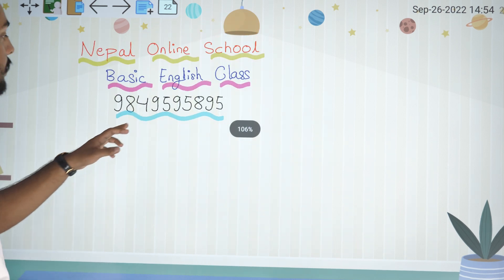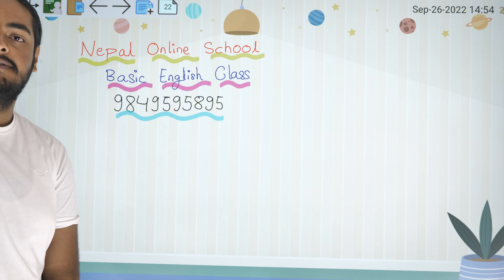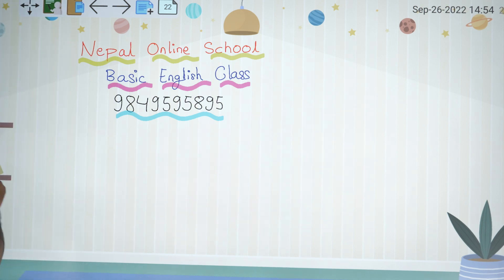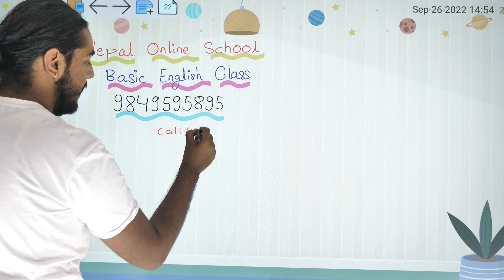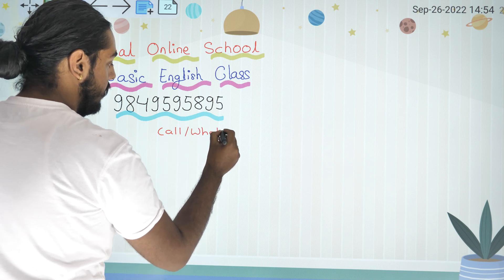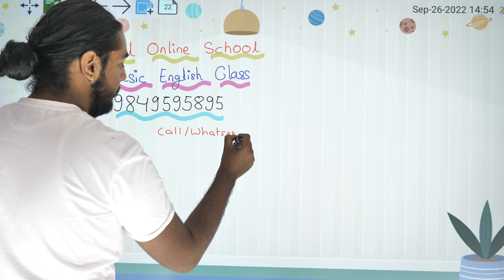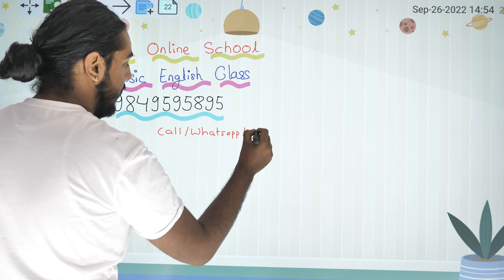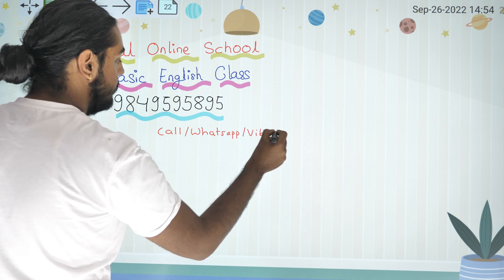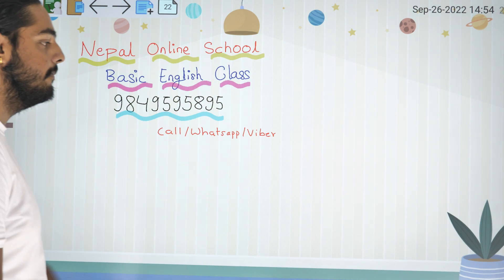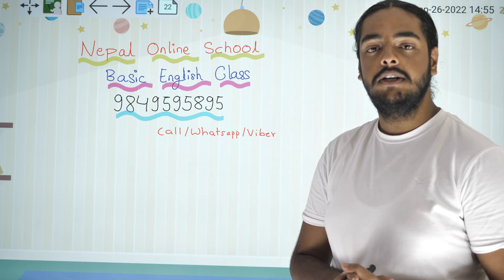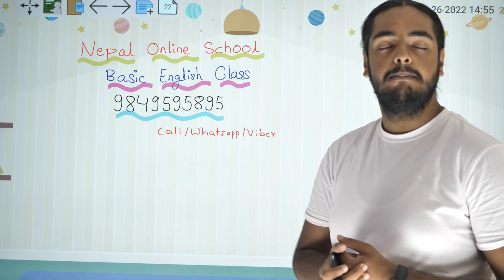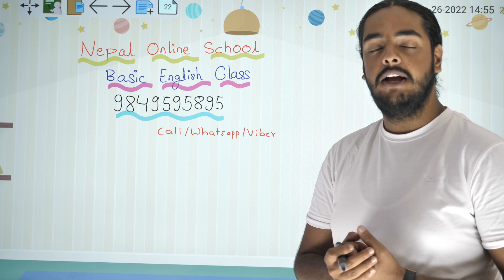This is our number: 984-95958. Perhaps we can call you — we can call you on Viber. We can conduct online classes during Zoom. So guys, thank you so much for watching. Thank you so much. Have a good day.